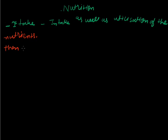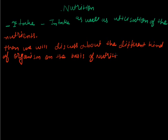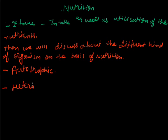We will discuss the different kinds of organisms on the basis of nutrition. Nutrition is not just only the intake of nutrients, but also their utilization. On the basis of nutrition, we can divide organisms into two categories: first, autotrophic organisms, and second, heterotrophic organisms. These are the two major categorizations of organisms based on nutrition.